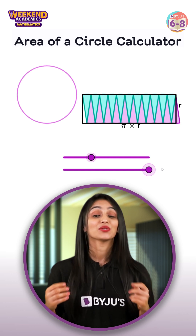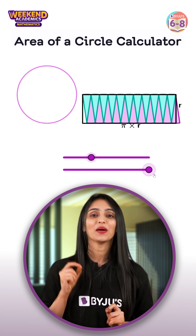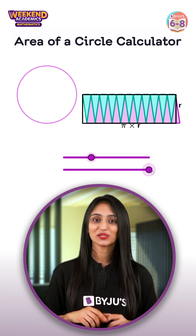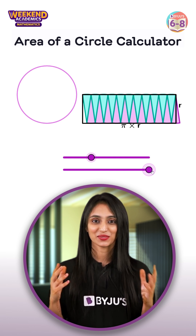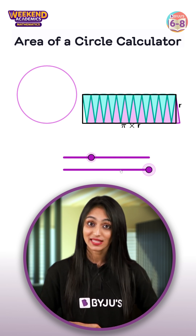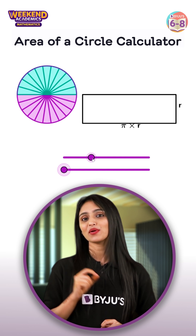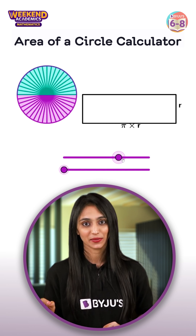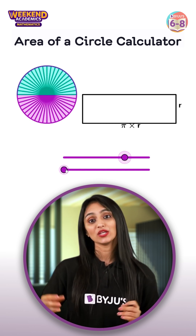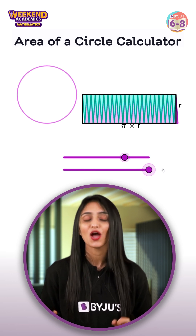So what do you notice? The area of the circle is equal to pi r times r, which is equal to pi r squared. How easy is that! Now move the slider and try with different numbers of segments in the circle. What do you notice when the number of segments increases?